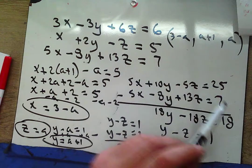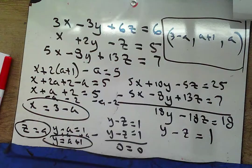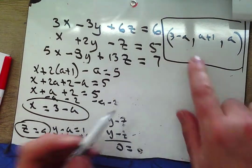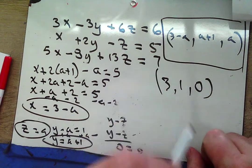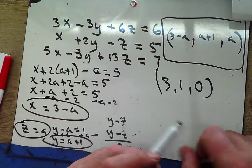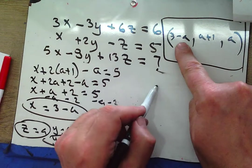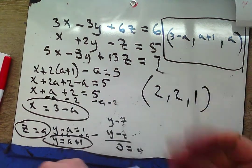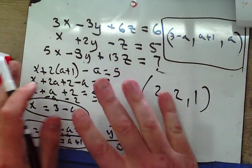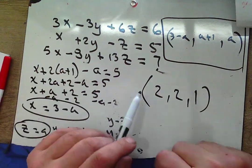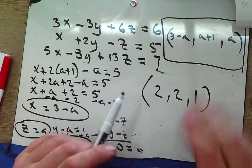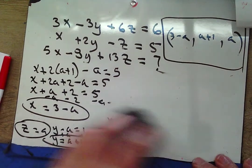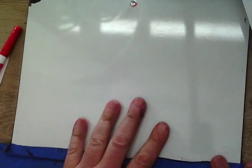Plugging in a = 0 gives the solution (3, 1, 0). Plugging in a = 1 gives (2, 2, 1). This ordered triple acts as a solution-generating machine for the infinite solution set. There's our parametric example.